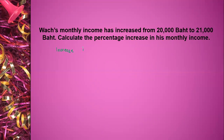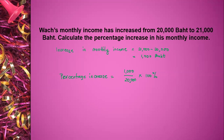Increase in monthly income is equal to 21,000 minus 20,000, equal to 1,000 baht. So percentage increase is equal to 1,000 divided by 20,000, times 100%, because 20,000 is the original value. 1,000 times 100 is equal to 100,000, divided by 20,000, is equal to 5%.